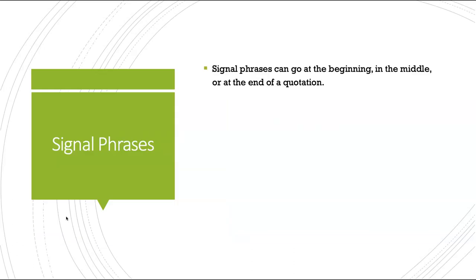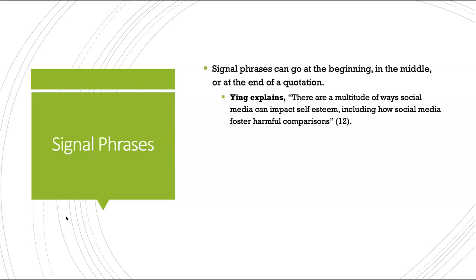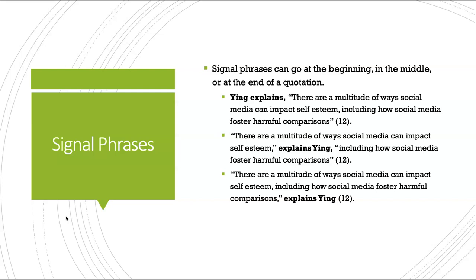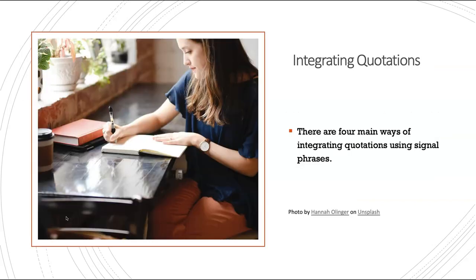A cool thing about signal phrases is that they can go anywhere in the sentence, really. You can put it at the beginning of the sentence, as we see here. You can put it in the middle of the sentence, as we see here. And you can put it at the end of a sentence, as we see here. So there's some flexibility. When integrating quotations, you need to use a signal phrase every time because that gives the reader an idea of who is speaking.